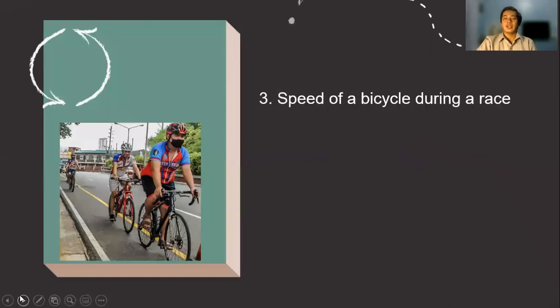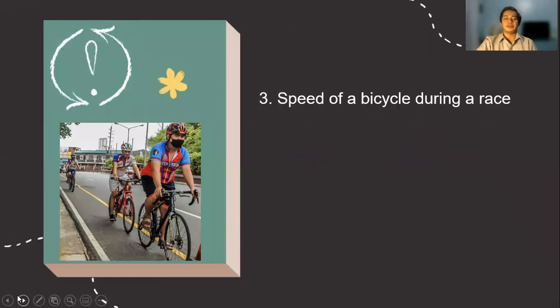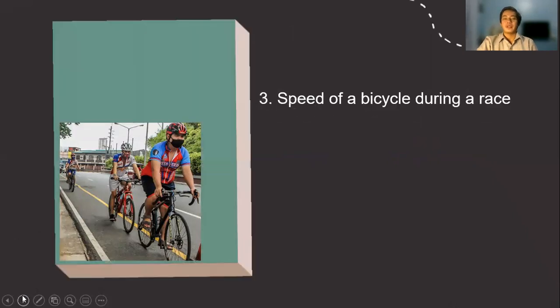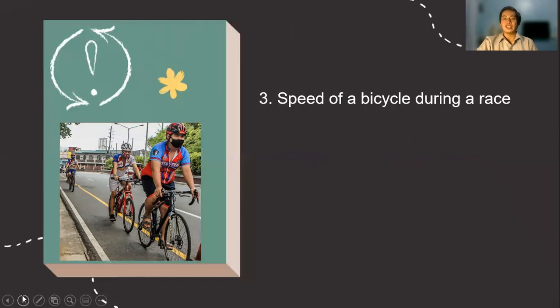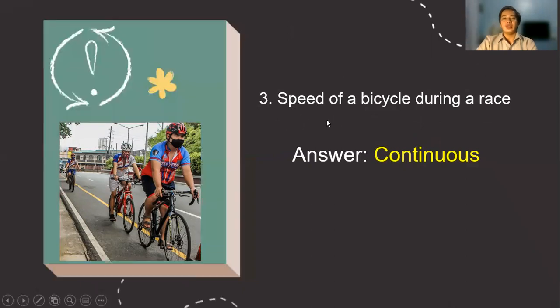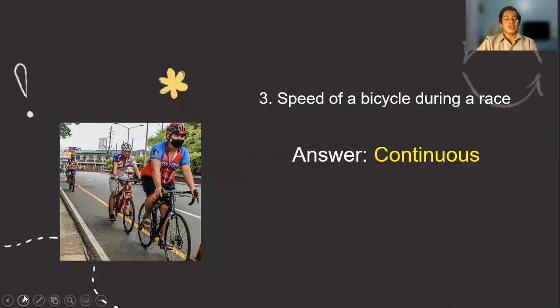Number three, the speed of a bicycle during a race. Is this a count data or a measured data? Very good. The answer is continuous because this speed could be a measured data which could also be expressed in decimal or in fraction.